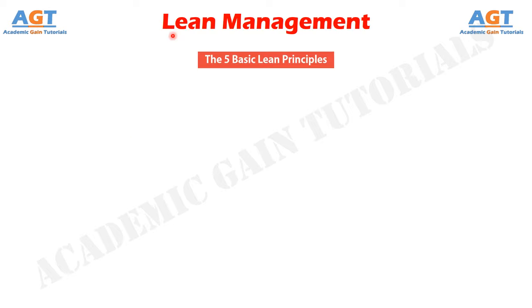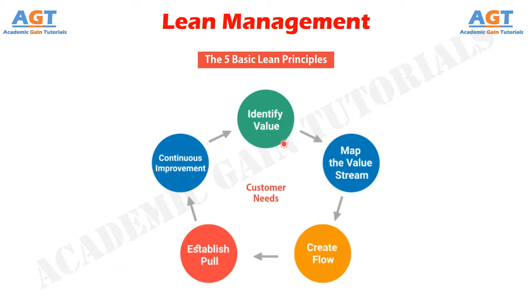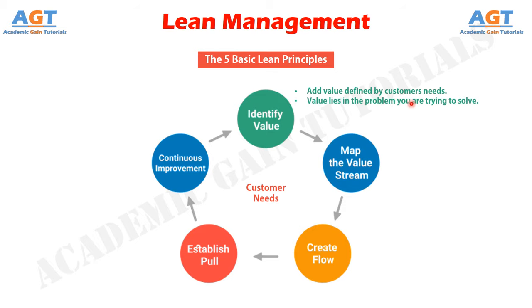There are five basic lean principles needed to create a lean system. Number one: identify value. What does every company strive to do? To offer a product or service that a customer is ready to pay for. To do so, a company needs to add value defined by its customers' needs. The value lies in the problem you are trying to solve for the customer — more specifically, in the part of the solution that your customer is actively willing to pay for. Any other activity or process that doesn't bring value to the end product is considered waste. You first need to identify the value you want to deliver and then proceed to the next step.